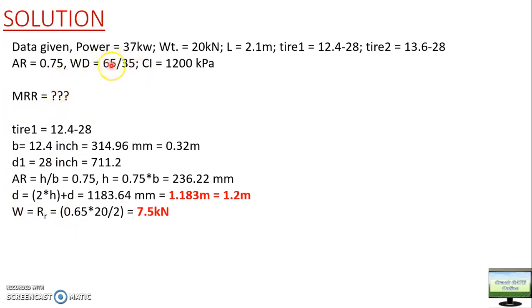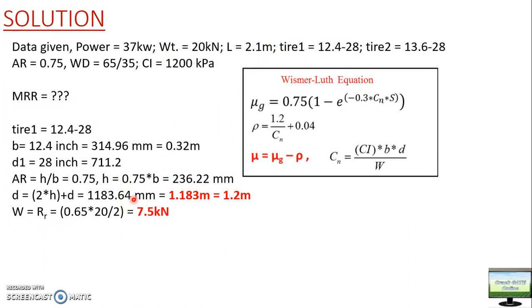The weight on the rear axle is 65% of total tractor weight (20 kN). But there are two tires on the rear axle, so on one tire it is divided by two - giving 7.5 kilonewtons per tire on the rear. Don't make the mistake of not dividing by two. Be clear on your concepts - 13 kilonewtons on the complete rear axle but only 7.5 kilonewtons on one tire.